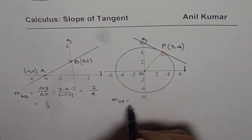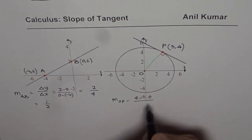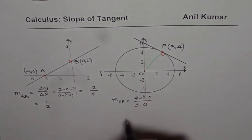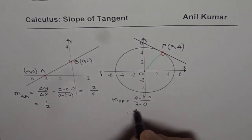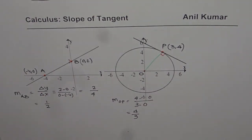Origin is at 0, 0. So slope OP will be 4 minus 0, divided by 3 minus 0. That gives you 4 over 3. So slope of this line OP is 4 over 3.